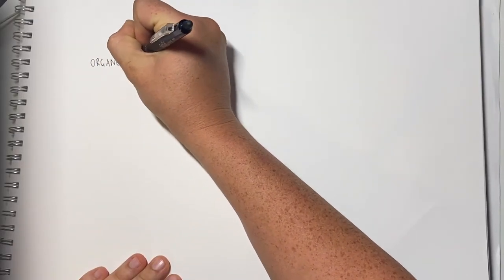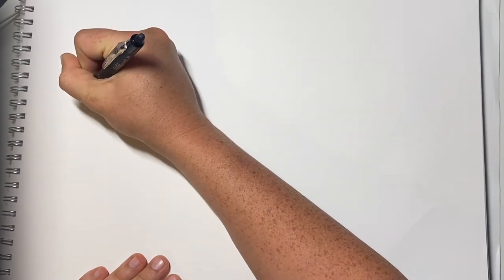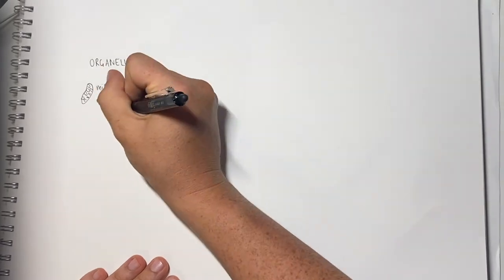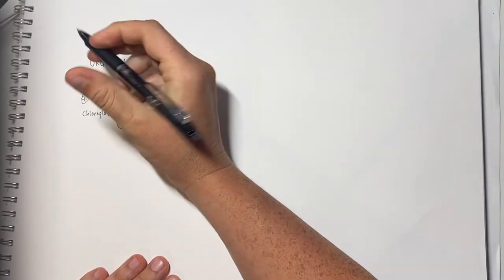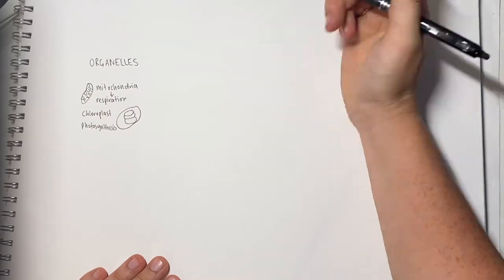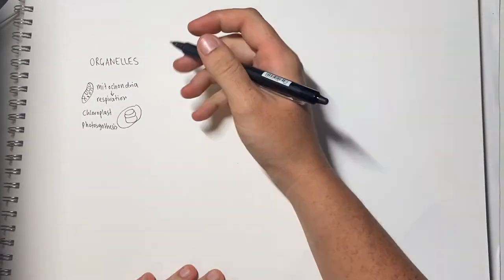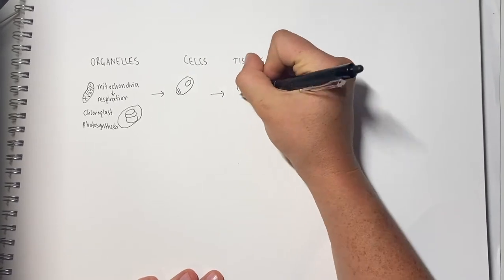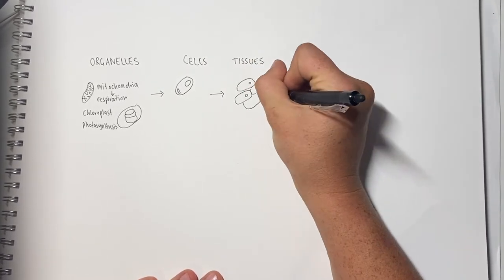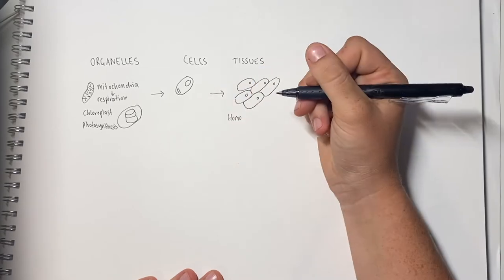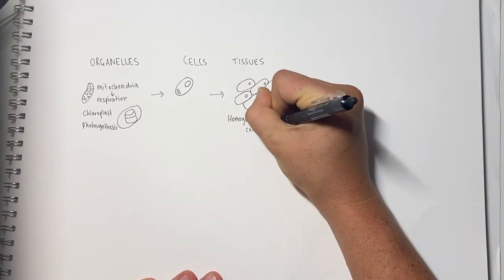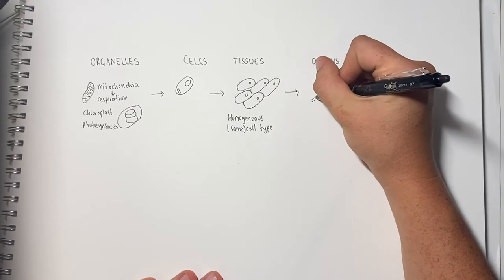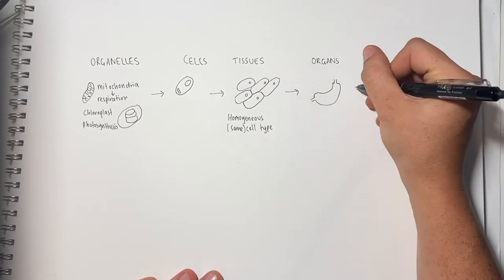Organelles and subcellular structures are the most basic features of an organism, performing specific metabolic functions within cells to sustain life. Cells are the next level up. Groups of homogeneous cells — that means the same type of cell — make up tissues. Different tissues form organs. Organs operate together within an organ system, and all of the organism's organ systems are coordinated by the brain. Due to hierarchical structures, each layer is more specialized and allows for a higher level of complexity within the organism.